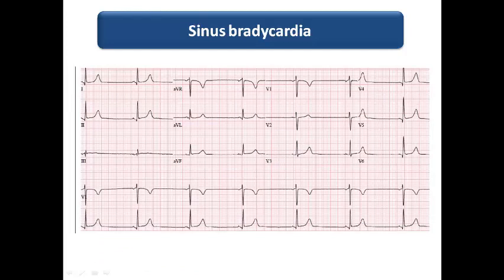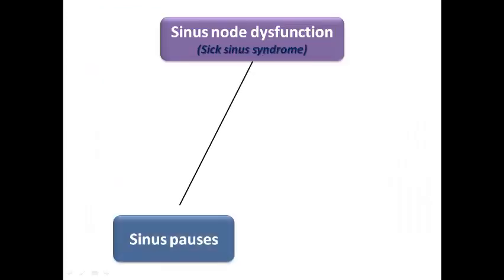Here is another ECG example of sinus bradycardia. We should look at the 12-lead ECG to confirm: normal P wave axis, positive in inferior leads, negative in aVR, and predominantly negative in V1 — so we can call this sinus bradycardia. Now let's move to the second type of sinus node dysfunction: sinus pause.